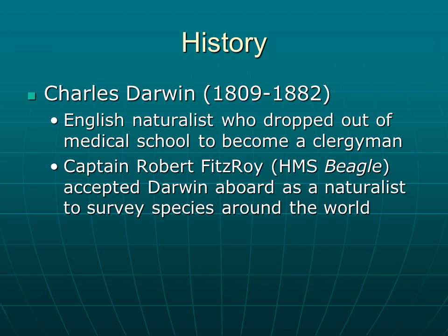In the first two segments we talked about researchers and scientists who first started asking questions about how species develop and how processes on the earth exist. Now let's talk about Charles Darwin, who is the most famous scientist who looked at this work. He was around from 1809 to 1882, and was an English naturalist who actually dropped out of medical school to become a clergyman — a point not a lot of people know about Darwin.